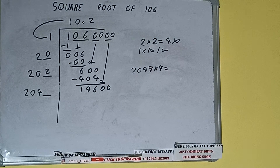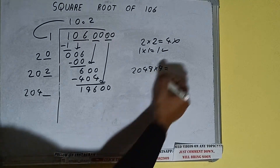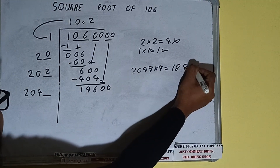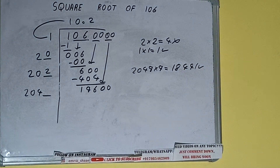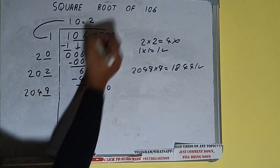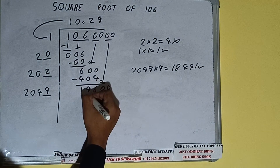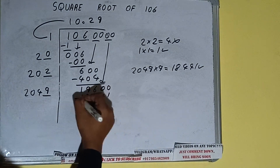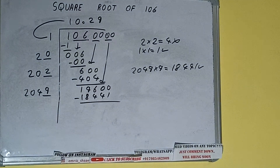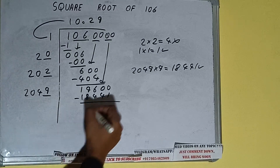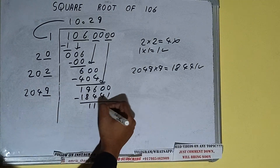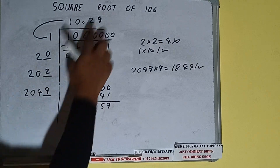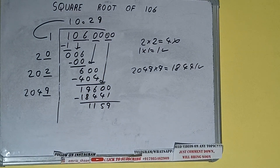So 29 times is 196. We can try 9 — 2049 into 9 — and we get 18,441, which is good to take. So 9 here and 9 here: 18,441 subtracted leaves 1,159. We did 2049 into 9, so add both: 2049 plus 9 equals 2058, with one digit extra.